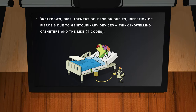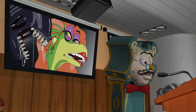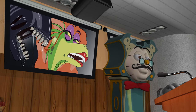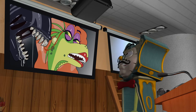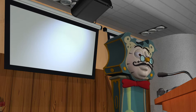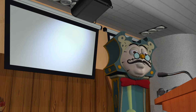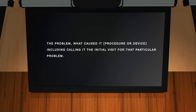Breakdown, displacement of, erosion due to, infection or fibrosis due to genitourinary devices — think indwelling catheters and the like — T codes. There are many more we could list, but instead let me just point out that you must start thinking of the underlying cause of that problem you're seeing in your office. If you are seeing that patient for that issue, and this is the first time you or anyone has seen it, you must document it properly: the problem, what caused it, the procedure or device — including calling it the initial visit for that particular problem.